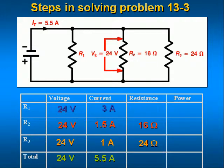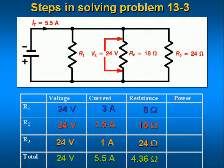Now we can calculate the value of R1. We know the voltage across it and the current through it, so R1 equals 24 volts divided by 3 amps equals 8 ohms. We have the total voltage and total current, so we can calculate the total resistance of the parallel circuit by dividing 24 volts by 5.5 amps, giving 4.36 ohms. The total power supplied to this circuit is 24 volts times 5.5 amps equals 132 watts.